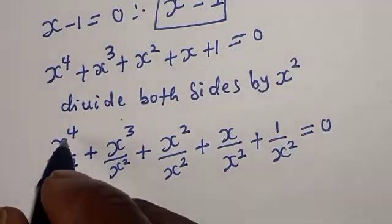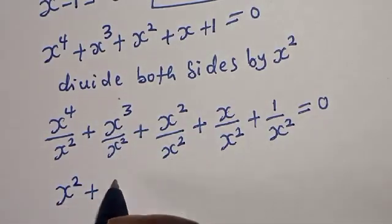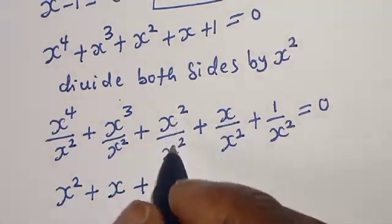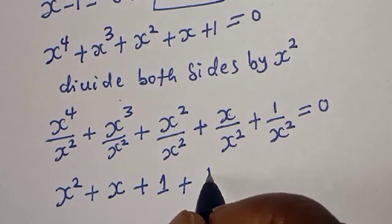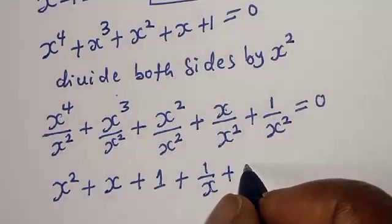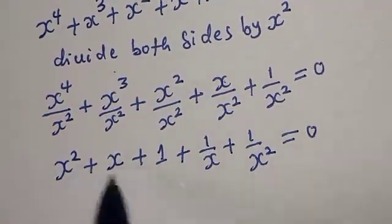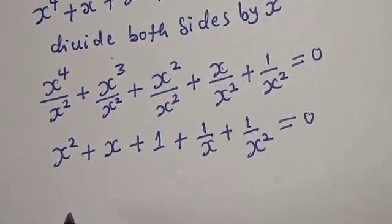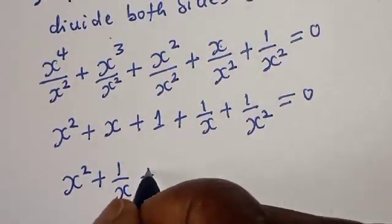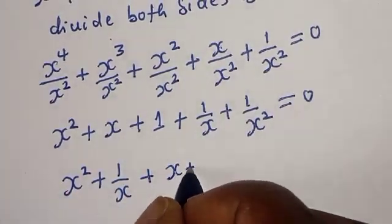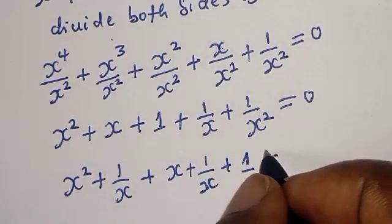Simplifying: x squared divided by x squared gives x squared. x cubed divided by x squared gives x. 1 divided by x squared stays as 1 over x squared. x divided by x squared gives 1 over x. So we have x squared plus x plus 1 over x plus 1 over x squared is equal to 0.